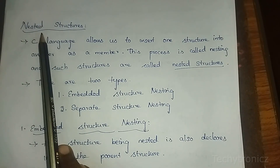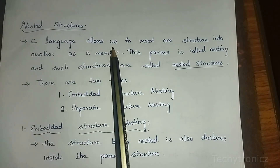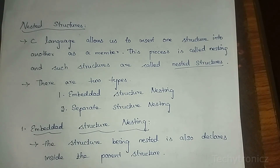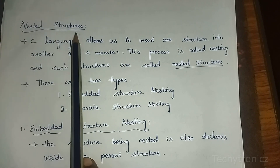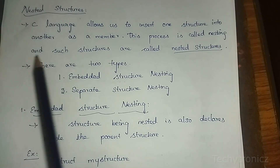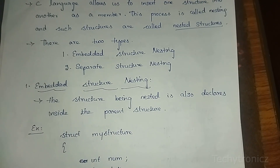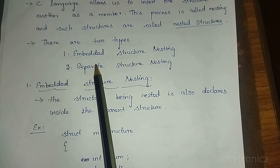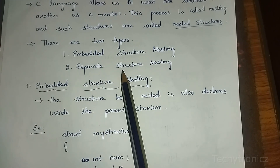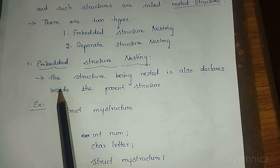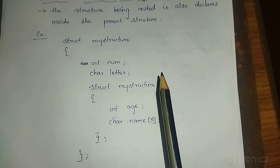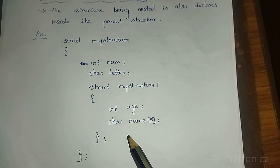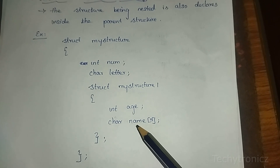The last topic is nested structures. C language allows us to insert one structure into another — similar to nested loops where one for loop is inside another. This process is called nesting, and such structures are called nested structures. There are two types: embedded structure and separate structure.